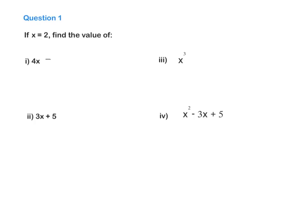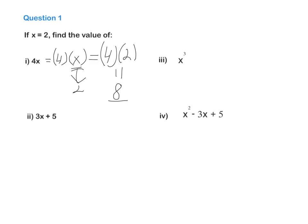We need to know our rules. 4X means we need to multiply 4 by X. And if we know that X equals 2, instead of X we need to write down 2. So that gives us 4 multiplied by 2, and 4 multiplied by 2 is 8. So 4X equals 8 if X equals 2.